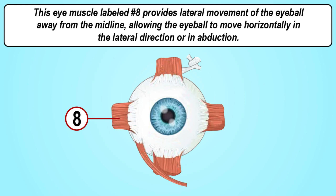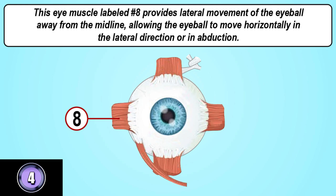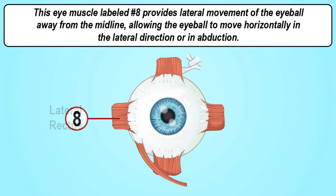This eye muscle labeled number eight provides lateral movement of the eyeball away from the midline, allowing the eyeball to move horizontally in the lateral direction, or in abduction. The answer is the lateral rectus.